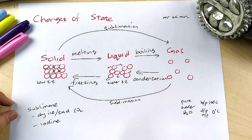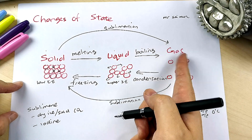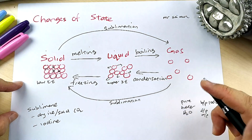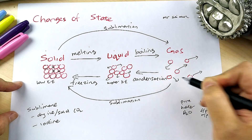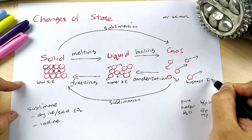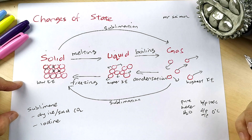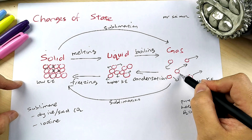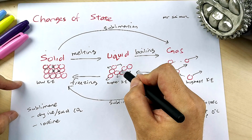As temperature increases further and you heat it up more, the particles move even faster. In the gas state, you have the highest kinetic energy.